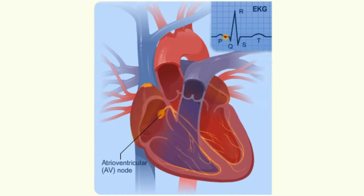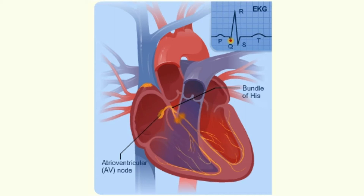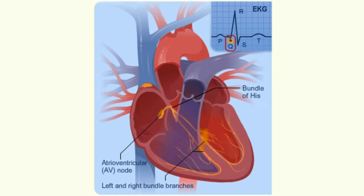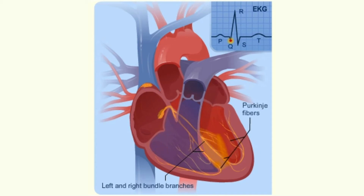The signal is released and moves next to the bundle of HIS located in your heart's ventricles. From the bundle of HIS, the signal fibers divide into left and right bundle branches, which run through your heart's septum. On the EKG, this is represented by the Q wave.